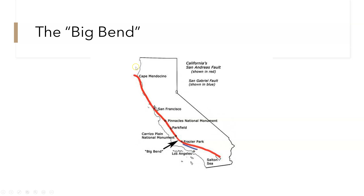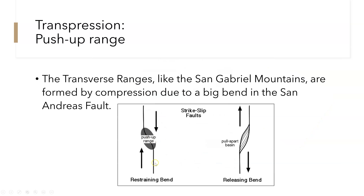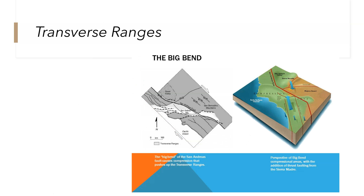Here is the big bend in the San Andreas fault. The San Andreas fault extends from Northern California all the way down to the Salton Sea, and it bends right at the San Gabriel Mountains. We have the Transverse Ranges, which transverse across California. The big bend of the San Andreas fault causes compression that pushes the Transverse Ranges up. Right where the two plates are sliding past each other and creating this fault, you'll see a large area where the Transverse Ranges come up due to this push-up range — this restraining bend. Because the Pacific plate is moving north and the North American plate is moving south relatively, it pushes them together, creating the Transverse Ranges.